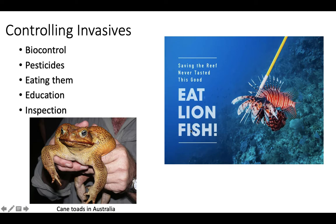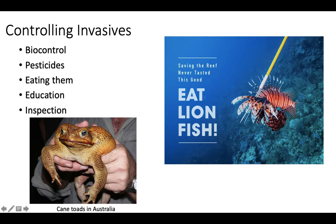We can do a couple of things to control invasives. We can use biocontrol — bringing in a predator to control the invasive species. Australia famously tried this with cane toads: they had insect pests destroying crops, so they brought in cane toads to eat the insects. It turned out the toads couldn't jump high enough to eat the bugs, started eating other things, and multiplied because they're toxic and Australian native predators couldn't eat them — totally out-competing other organisms. We can also try eating the invasive species: lionfish is invasive, and there's a big push to make it a delicacy to increase demand for eradicating them, while also educating people so they're not contributing to the problem.